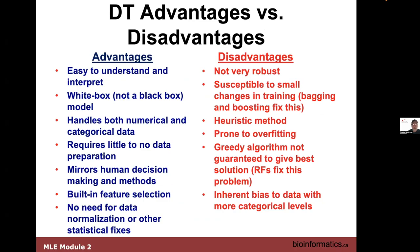Decision trees are simple to understand — there's not complicated math. We use decision trees every day, whether taking a path home from work, deciding what to do with scientific experiments, or assessing how to choose passengers for lifeboats. Decision trees are considered a white box, not a black box, because we can see the method of decision. You can work with numerical or categorical data, you don't need to do any scaling or normalization, and it models how we think. We don't need statistical fixes.